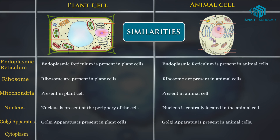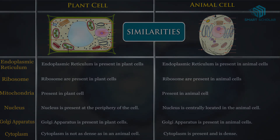Cytoplasm: in plant cells, the cytoplasm is not as dense as in an animal cell. In animal cells, the cytoplasm is present and is dense.